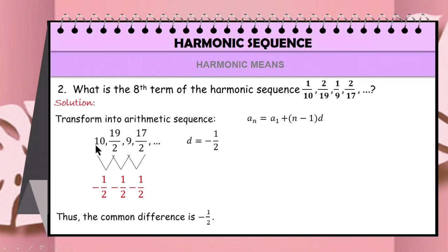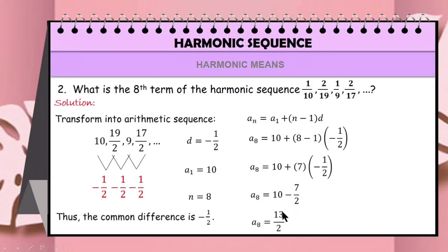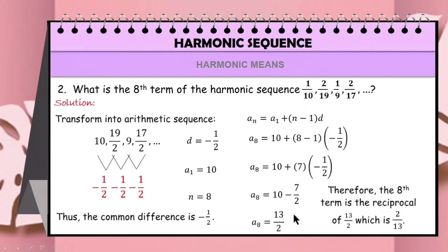The first term, a_1, is 10, and the number of terms n is 8, since we're looking for the 8th term. Substituting these values into the equation, we have a_8 = 10 + (8 − 1)(−1/2). 8 minus 1 is 7, and 7 times −1/2 is −7/2. And 10 minus 7/2 is 13/2. Therefore, the 8th term of this harmonic sequence is the reciprocal of 13/2, which is 2/13.